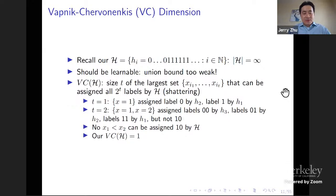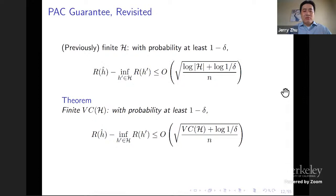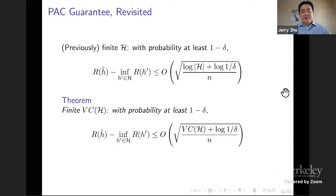The VC dimension of a hypothesis family is the size T of the largest set of input items X_{i1} to X_{iT} that can be assigned all possible combinations of labels by hypotheses in the family — known as shattering. For our threshold functions, T=1 works: X=1 can be labeled zero by h_2 and one by h_1. But T=2 fails: no pair of inputs can be labeled (1,0) by any threshold function. So the VC dimension of our threshold function class is one. With finite VC dimension, we can replace the log|H| term with the VC dimension in the PAC bound.